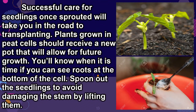Successful care for seedlings once sprouted will take you on the road to transplanting. Plants grown in peat cells should receive a new pot that will allow for future growth. You'll know when it is time if you can see roots at the bottom of the cell. Spoon out the seedlings to avoid damaging the stem by lifting them.